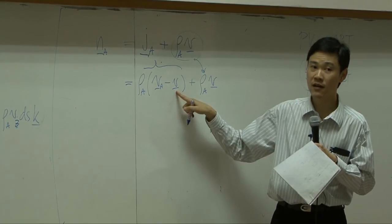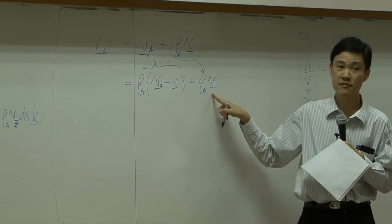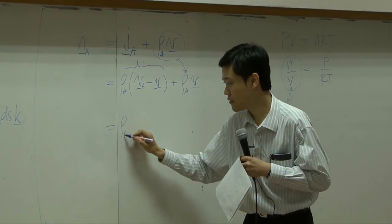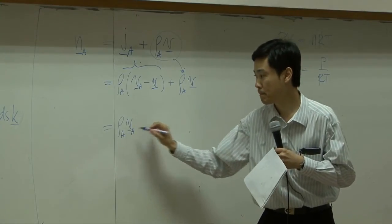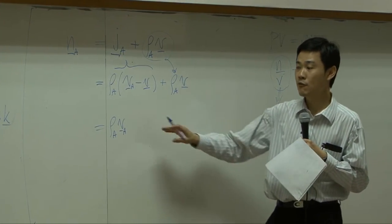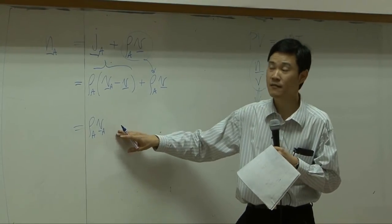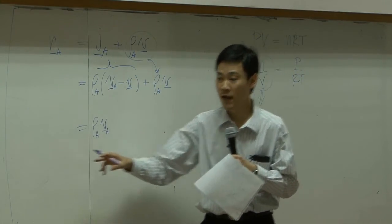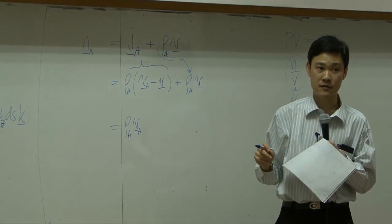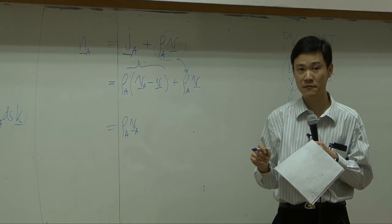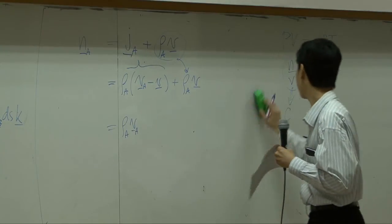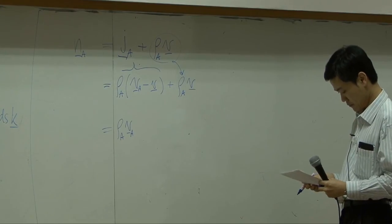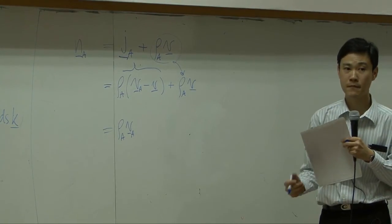Okay? If you multiply rho A into the parenthesis here, rho A times V on the second term should cancel out with this third term. And as a result, you get rho A V A. So rho A V A is indeed combined flux. It's a combined flux. Rho A V itself is convective flux. It is a little bit confused.